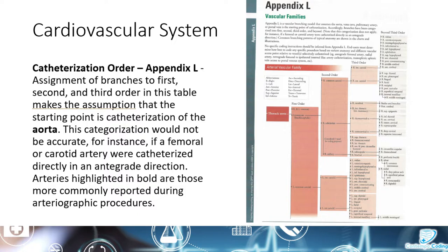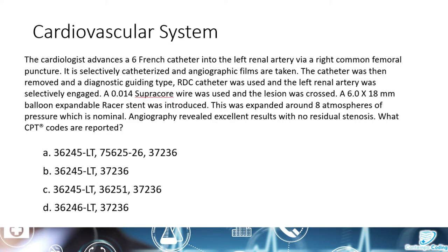Arteries highlighted in bold are those more commonly reported during arteriographic procedures. Now let's take a look at this example: the cardiologist advances a sixth French catheter in the left renal artery via a right common femoral puncture. It is selectively catheterized and angiographic films are taken. The catheter was then removed, and a diagnostic guiding type RDC catheter was used and the left renal artery was selectively engaged. A 0.014 supercore wire was used and the lesion was crossed.